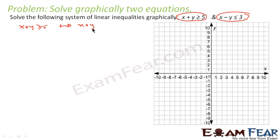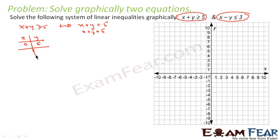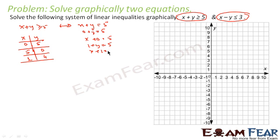To draw the line we'll take x and y values. When x is equal to 0, y is equal to 5, because 0 plus y equals 5. When y is equal to 0, x plus 0 is equal to 5, so x becomes 5. We'll take one more point: x is equal to 1, then 1 plus y equals 5, so y equals 4. And if y equals 1, then x plus 1 equals 5, so x equals 4.